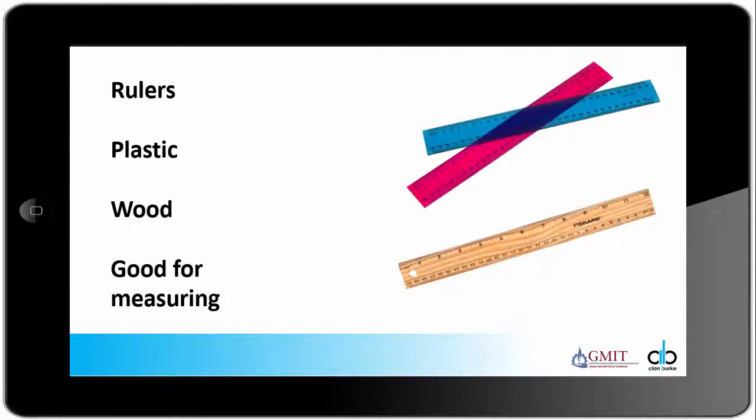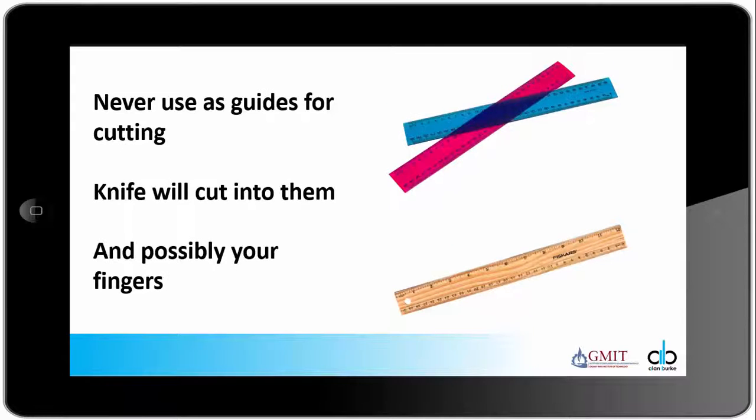These are rulers. Rulers come in all shapes and forms, all different lengths. Some rulers are made from plastic, some are made from wood. The plastic and the wooden rulers are good for measuring, that is it. Never use plastic or wooden rulers as guides for your knife when cutting. The knife will cut into them because the knife is sharper than the wood and the plastic, and it can actually cut into the ruler which could ricochet off and cut your fingers.